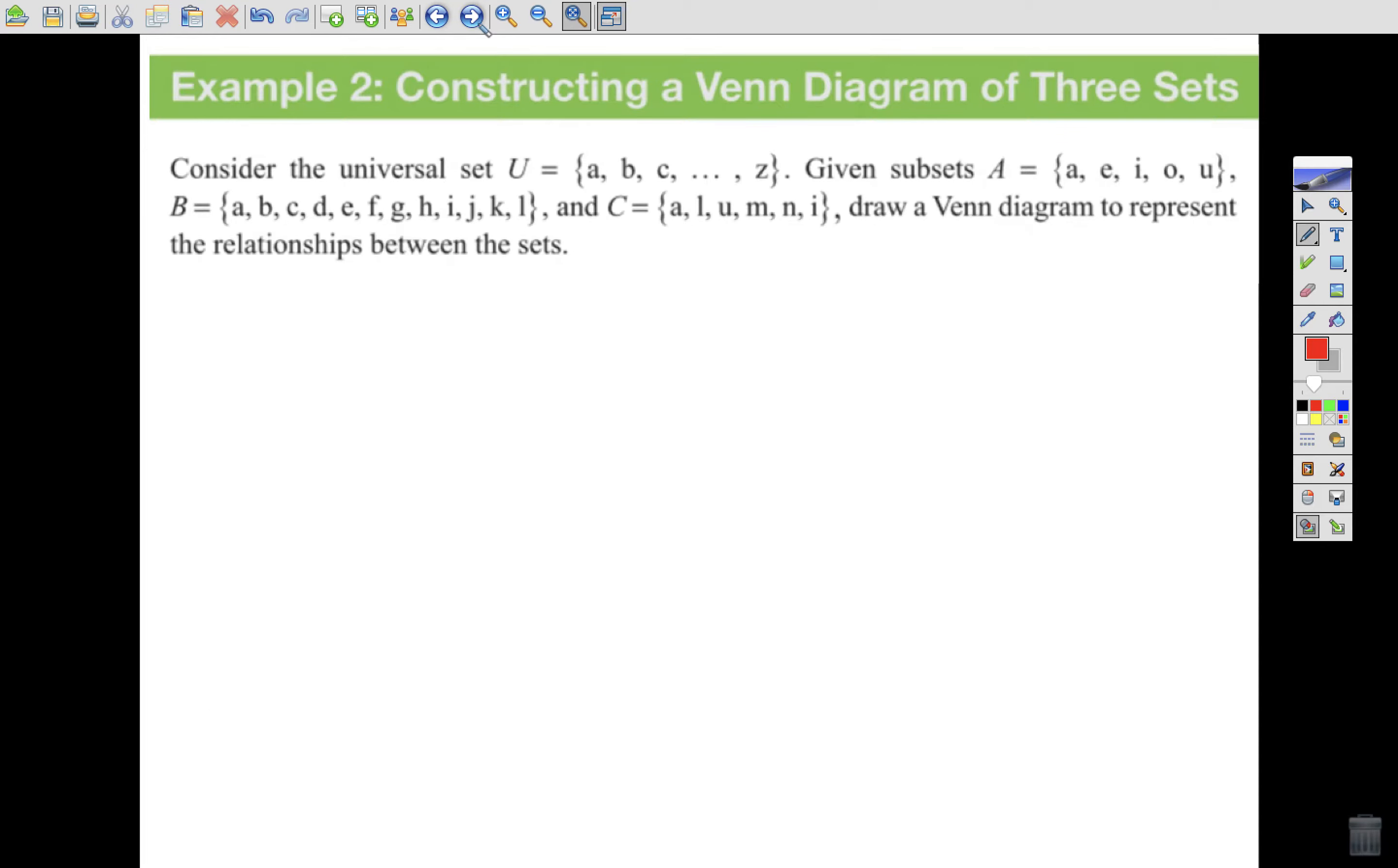Well, it's not just good enough to be able to interpret these Venn diagrams. It's important to be able to construct them. So, let's consider the universal set A, B, C, all the way to Z. So this looks like the entire alphabet. Given sets A, which is A, E, I, O, U. Set B, which is A, B, C, D, E, F, G, H, I, J, K, L. And set C, which is A, L, U, M, N, I. So we're going to draw a Venn diagram to represent the relationship between the sets.